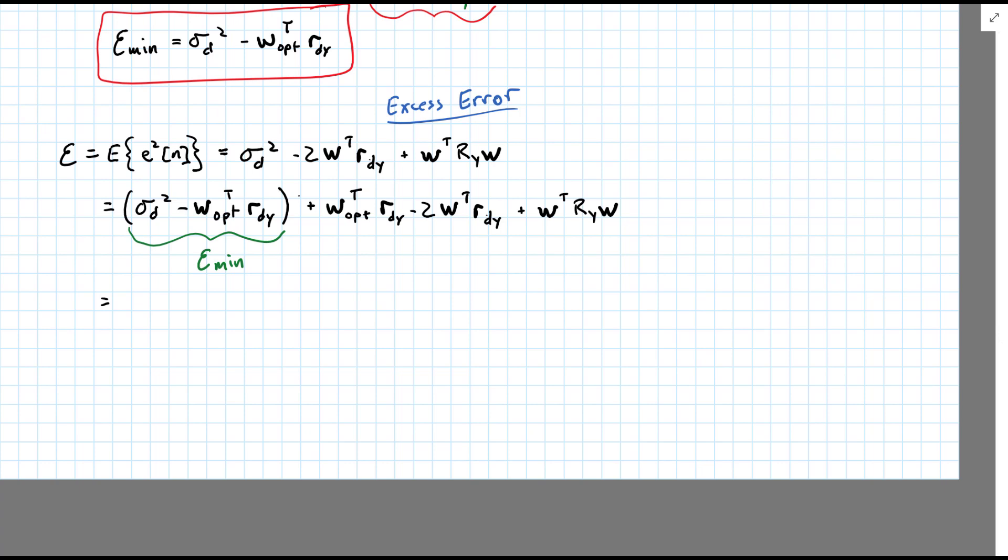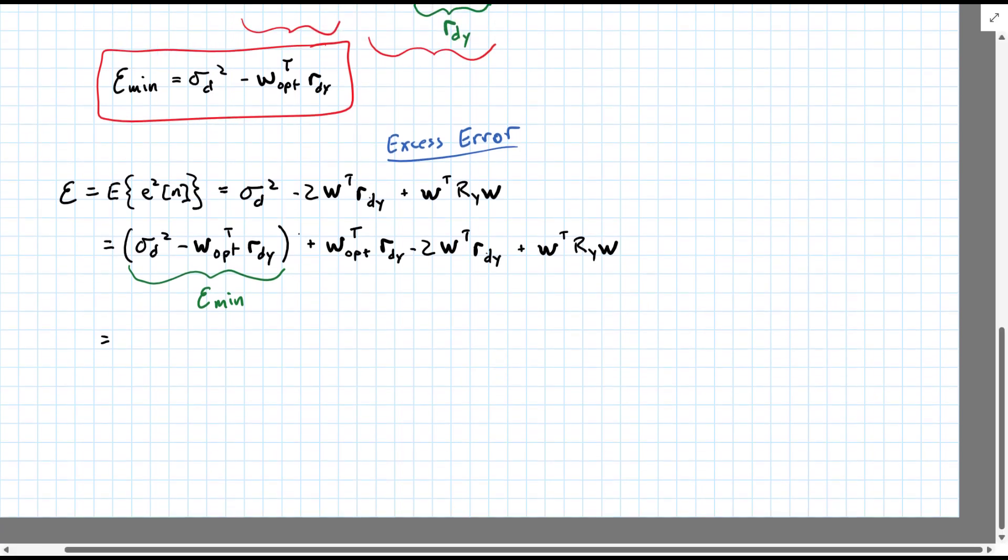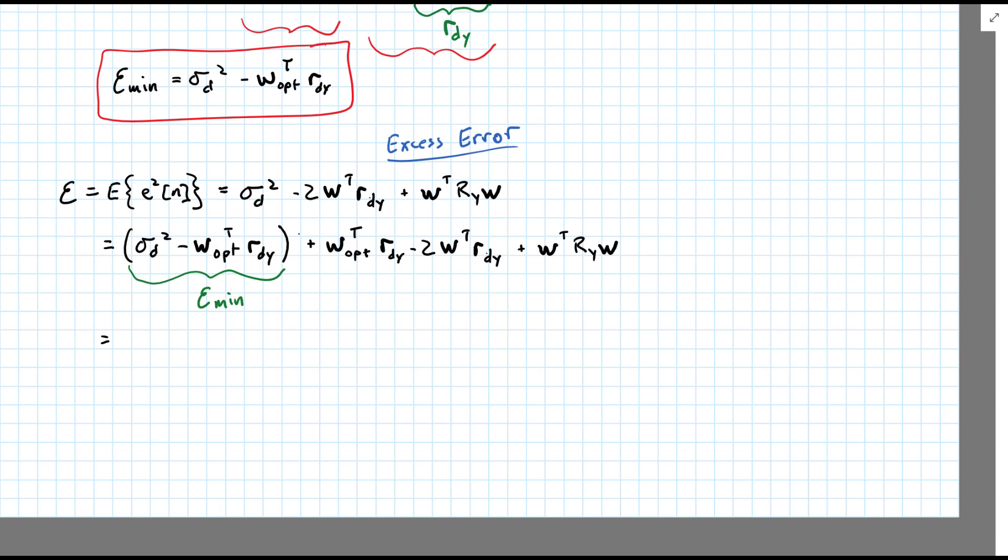We already know that r_dy is equal to r_y times w_opt. And so, that shows up here and here. Let's go ahead and make those substitutions.